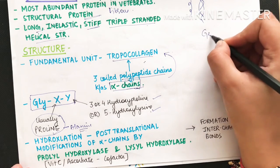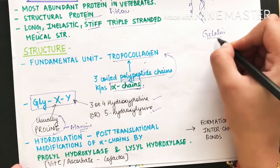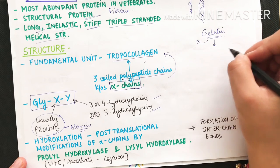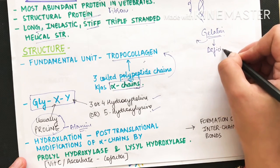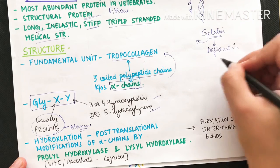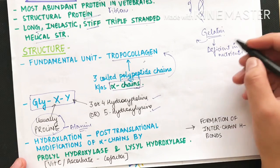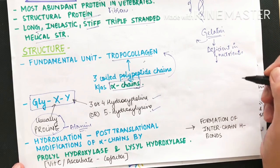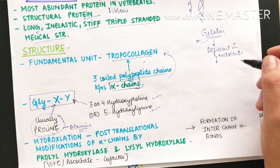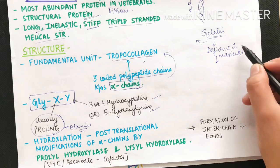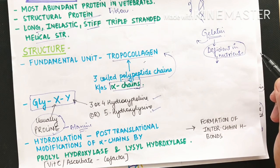Gelatin is also a type of collagen, but it is very deficient in nutrients and not a rich source of protein. This is because gelatin lacks many essential amino acids, and only one or two amino acid units are repeated, so we don't get any variety of amino acids — that's why it is a deficient protein source.